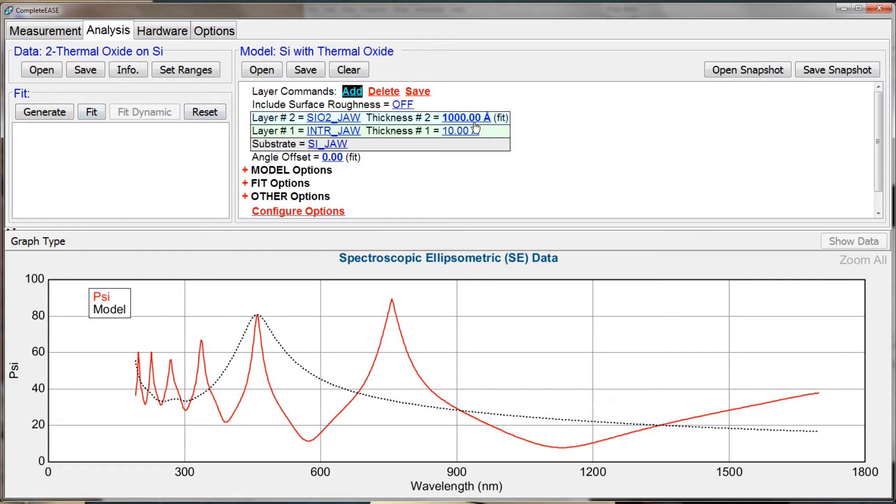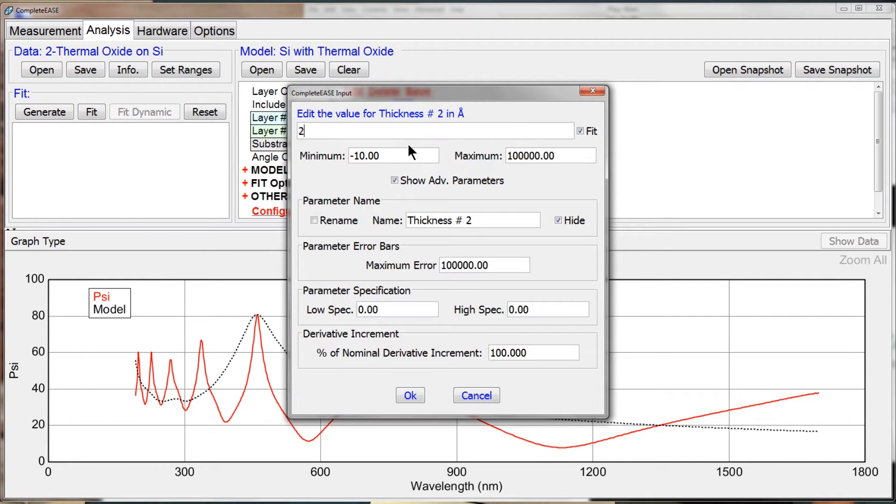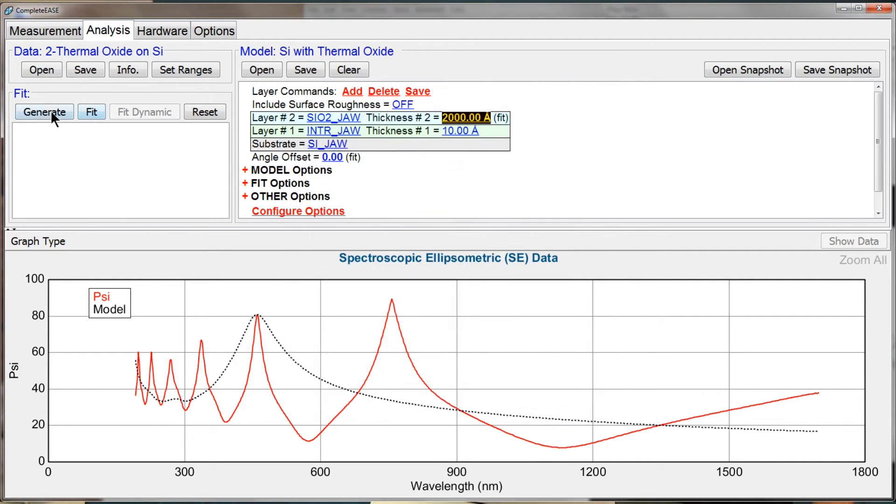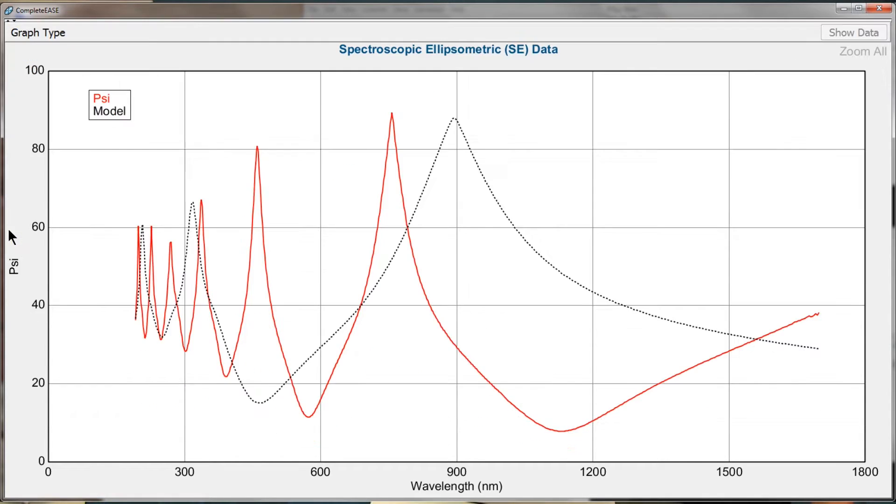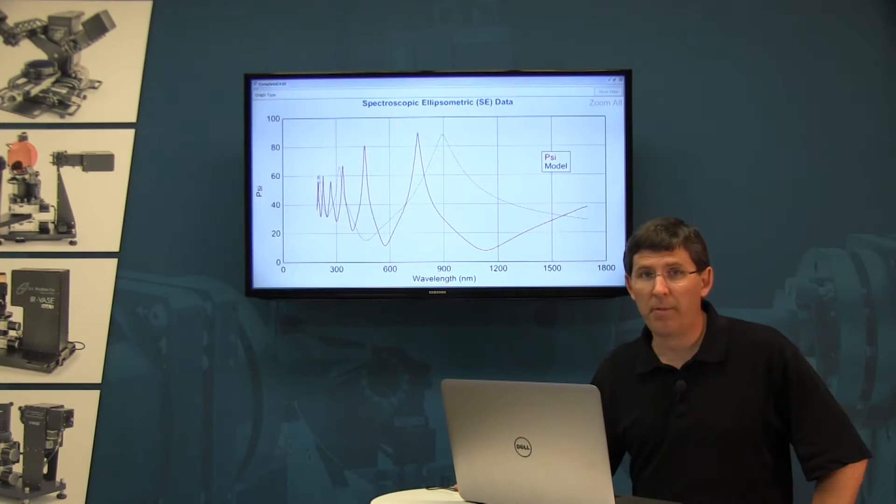Instead of 1,000 angstroms, let's change it to 2,000 angstroms and generate again. Notice that when I did that I shifted the positions of my peaks and I also increased the number of peaks and valleys in my model calculation, but still not enough to match my experimental data.